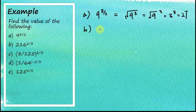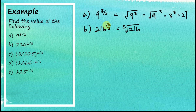B: 216 to the power of 2 over 3. The denominator is 3, therefore this is the cube root of 216. The cube root of 216 is 6 — you can find this easily using your calculator — and then it is squared, so this becomes 36.